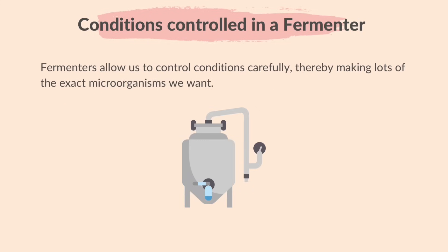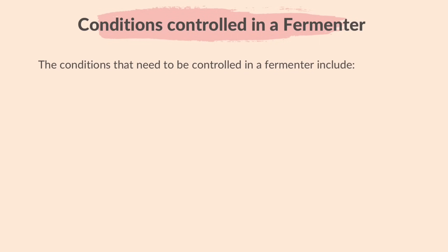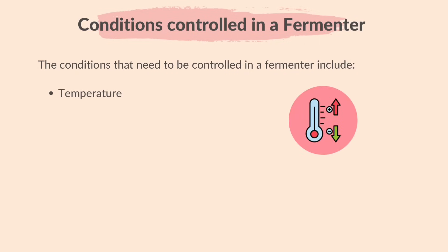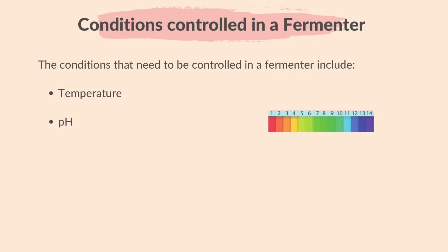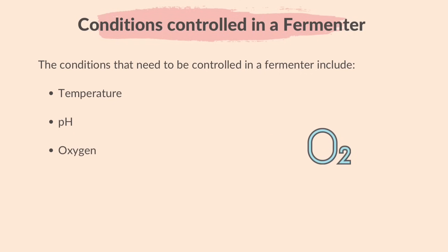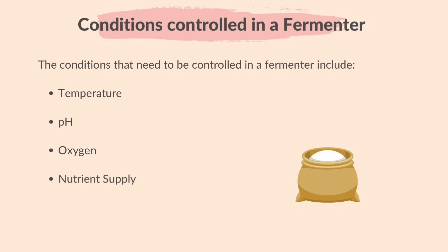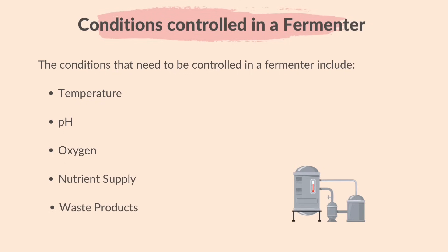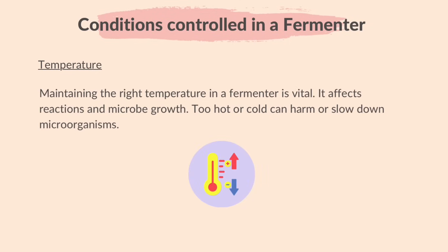Fermenters allow us to control conditions carefully, thereby making lots of the exact microorganisms we want. The conditions that need to be controlled in a fermenter include temperature, pH, oxygen, nutrient supply, and waste products. Maintaining the right temperature in a fermenter is vital — it affects reactions and microbe growth. Too hot or cold can harm or slow down microorganisms.